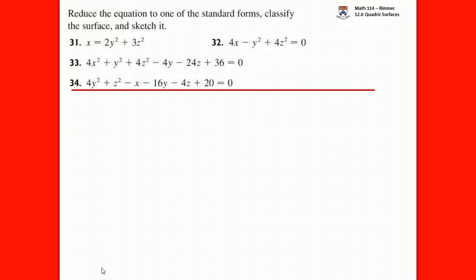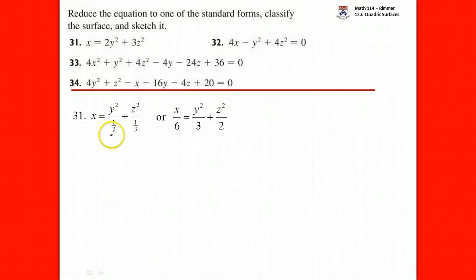Here's an equation — put it in standard form and give it a name. For question 31, the standard form has x over a constant, y squared over a constant, and z squared over a constant. We make y squared be over one-half and z squared over one-third. The x is isolated and not squared, so it's a paraboloid. You can also multiply through by one-sixth to clear the fractions. Either form is fine — if you can identify the shape from the equation, that's sufficient. It's an elliptic paraboloid.